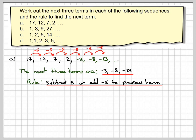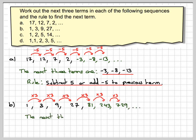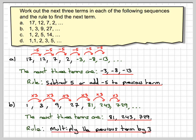In part b, we've got 1, 3, 9, and 27. Well, you might notice if you multiply 1 by 3, you get 3, and then 3 by 3, you get 9, and then three nines are 27. If we carry that process on, 3 times 27 is 81, and then 3 times 81 is 243, and 3 times 243 is 729. That carries on. And therefore, the next three terms are going to be 81, 243, and 729. The rule is going to be multiply the previous term by 3.